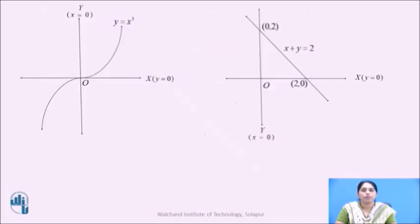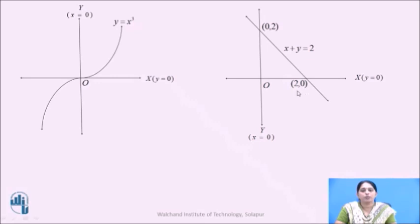Let us see it graphically. Here, y equals x cubed is a curve which is symmetrical in opposite coordinates and passing through the origin, and the line x plus y equals 2 is a straight line which cuts the two axes making an intercept of 2. So it intersects the x-axis at the point (2, 0) and it intersects the y-axis at the point (0, 2).